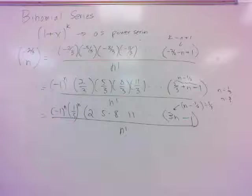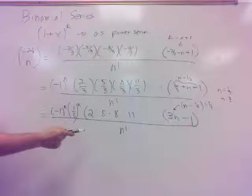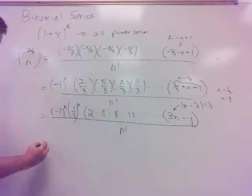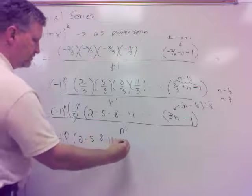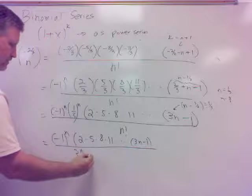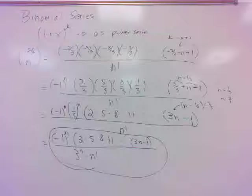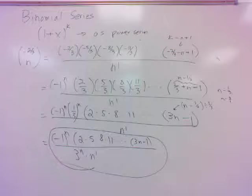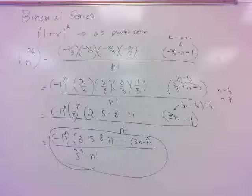The only other thing is what they'll typically like. 1 third to the n. Couldn't I write that in the bottom just as 3 to the n? Basically, 1 to the n over 3 to the n. So the 3 to the n will go to the bottom. There you go. Good stuff.